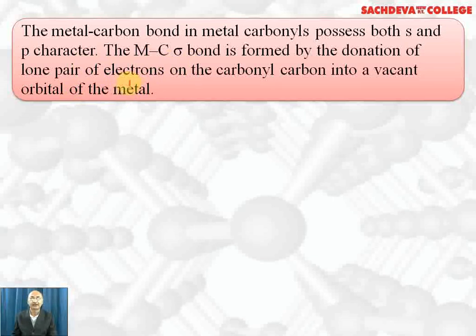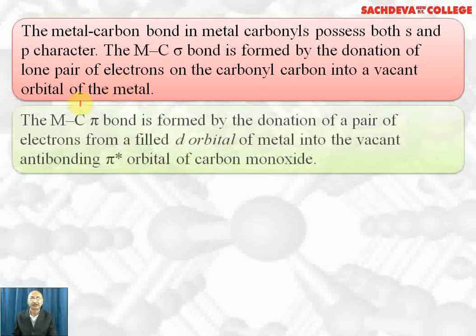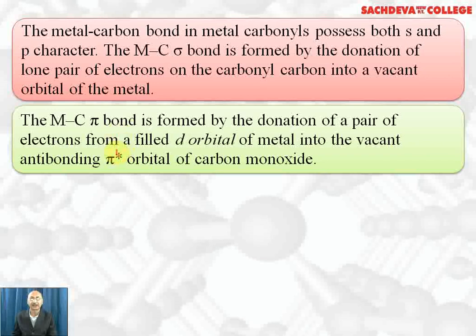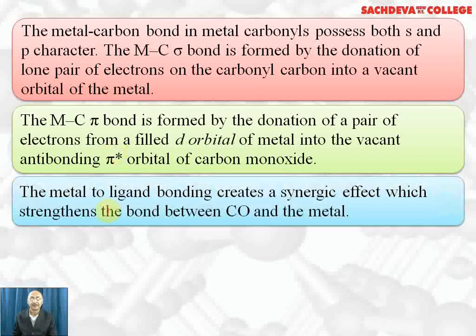The metal–carbon sigma bond is formed by donation of a lone pair of electrons on the carbonyl carbon into a vacant d orbital of the transition metal. The pi bond is formed by donation of a pair of electrons from the transition metal into the vacant anti-bonding molecular orbital of carbon monoxide. The metal-to-ligand bonding creates a synergistic effect which strengthens the bond between carbon monoxide and the metal.